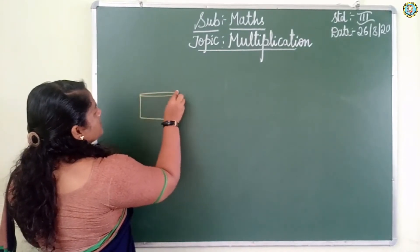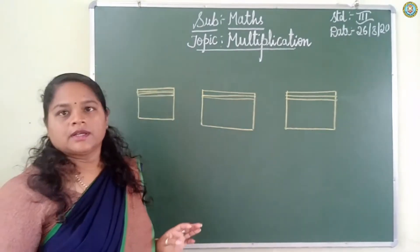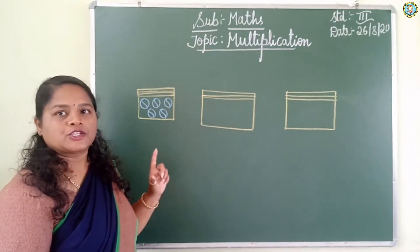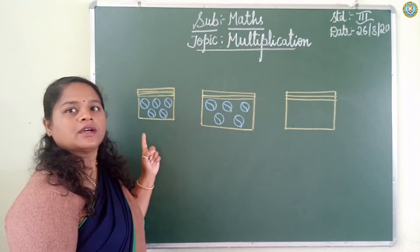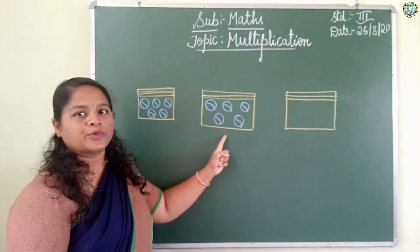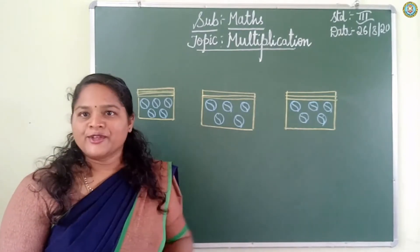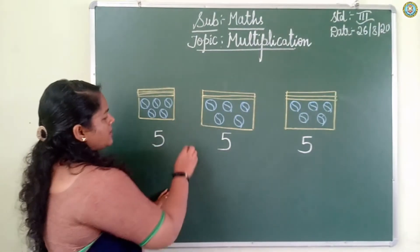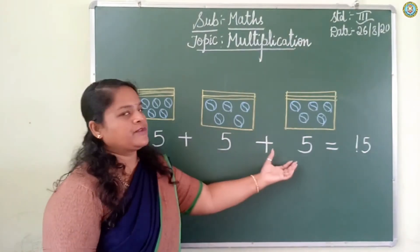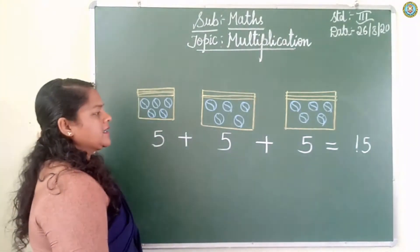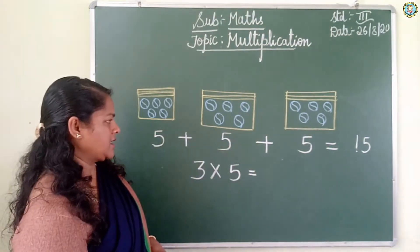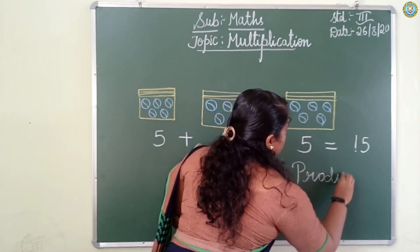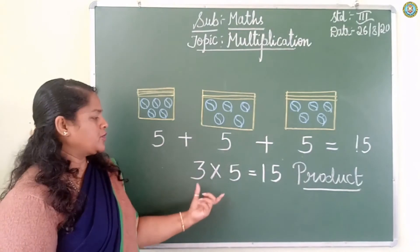Multiplication is nothing but repeated addition. Before learning multiplication, I would like to tell you all children: you have learnt tables from 1 to 10 in second standard. So you will be learning from 11 to 15. That means 1 to 15, you are going to learn the tables.